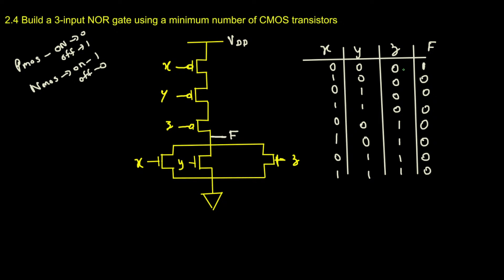This is the opposite behavior of an OR gate — in an OR gate it's only 0 when all inputs are 0, otherwise it's 1. In a NOR gate it's exactly opposite: it's only 1 when all inputs are 0, otherwise it's 0. Therefore we have proven that this circuit implements the NOR gate truth table, and we have successfully designed a 3-input NOR gate using CMOS transistors. Thanks for watching — don't forget to subscribe and see you in the next video.